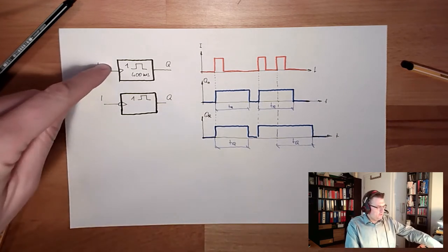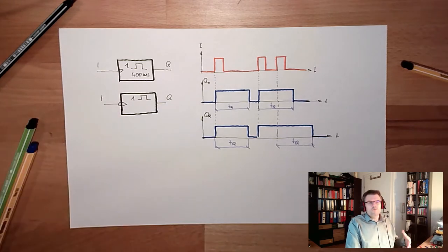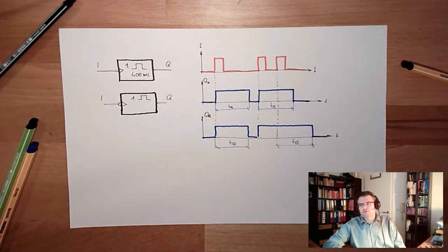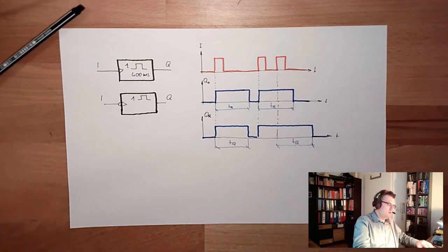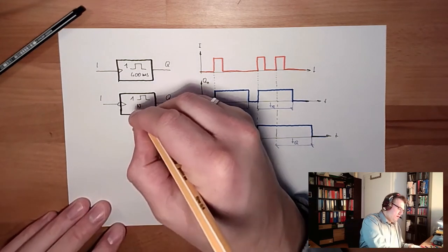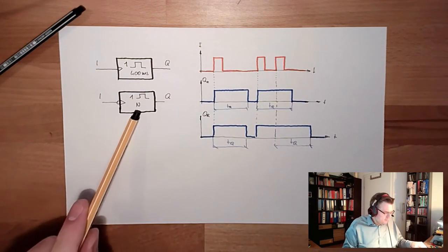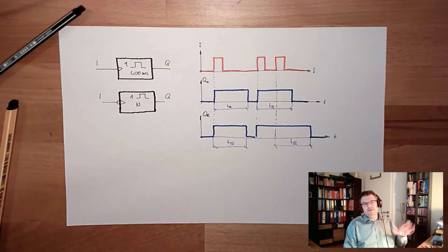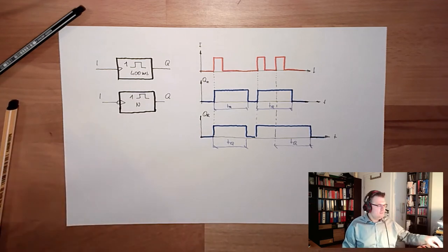Both can react on the rising or falling edge, and both can be re-triggerable or not re-triggerable. You have to look — sometimes it's written with an N which means non-re-triggerable. That's a German notation — it stands for 'newly triggered'.